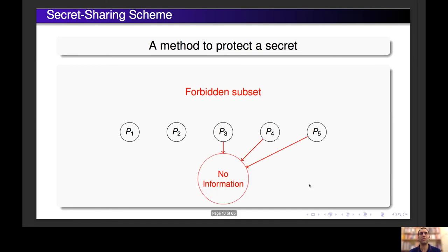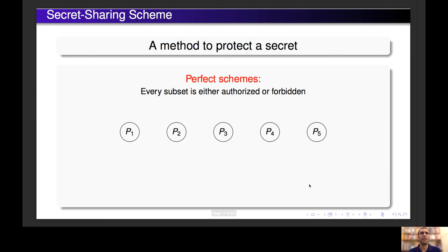We also have other subsets that cannot get any information about the secret, and these subsets are called Forbidden Subsets. When we say 'no information,' this is in the Information Theory sense. In this talk, we only consider perfect schemes — that is, schemes in which every subset is either authorized or forbidden.